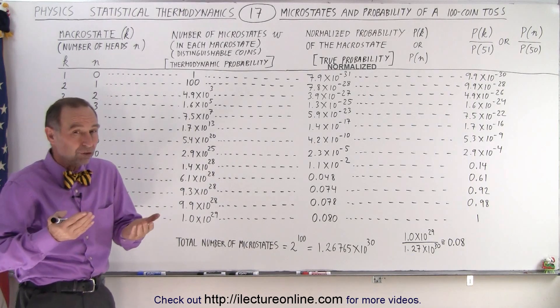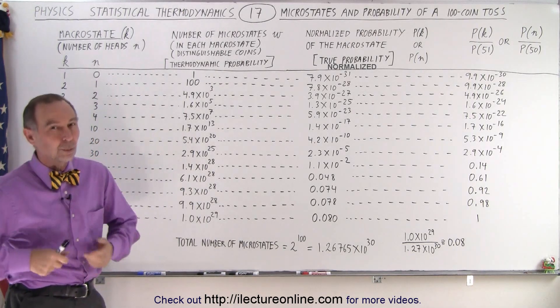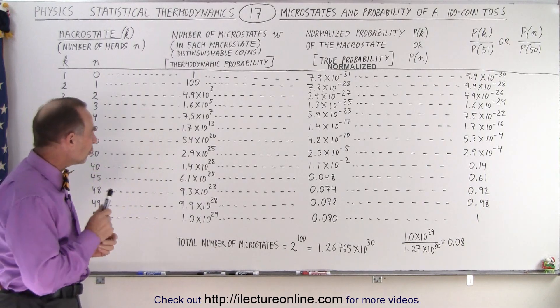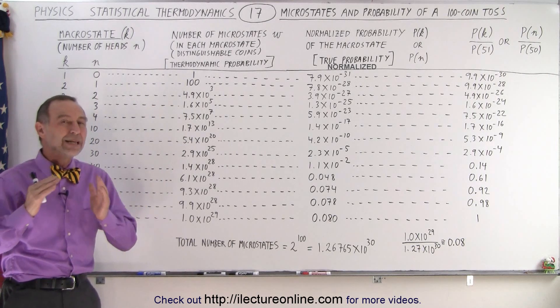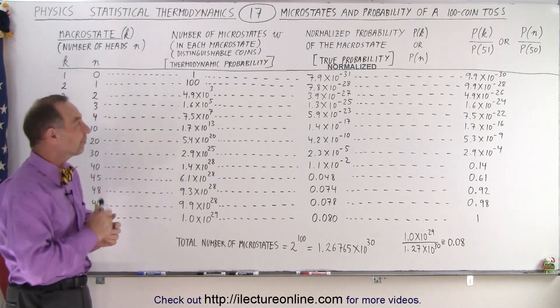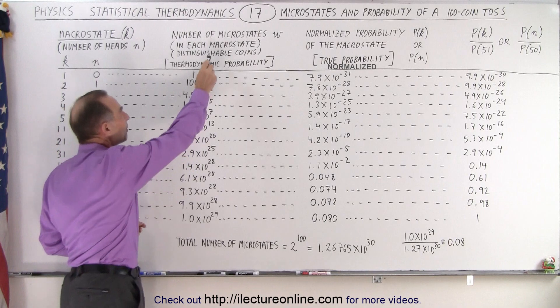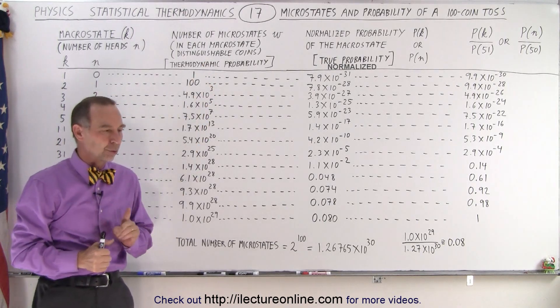So we have a hundred coins. They can either be heads or tails. We toss them up. What will be the result? Notice when we talk about the probabilities that the numbers begin to be really big, really fast.